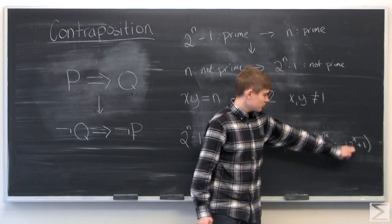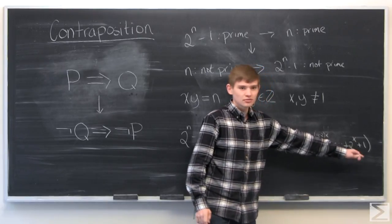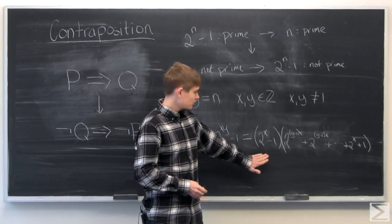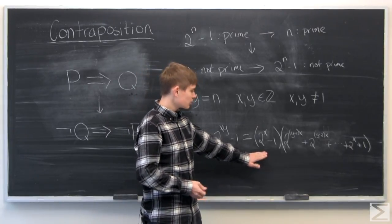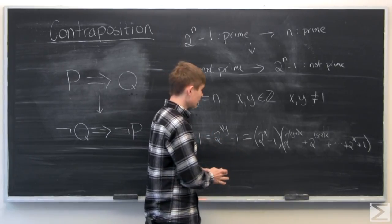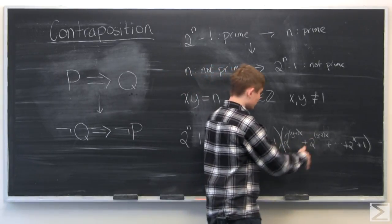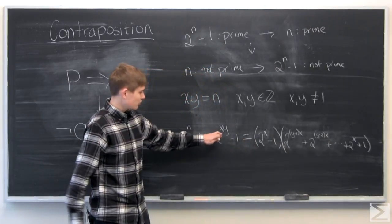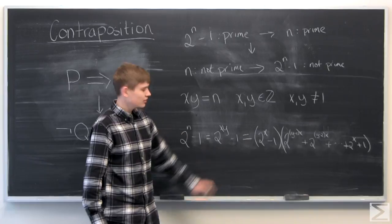And if this doesn't seem like it would work, if you start multiplying them out, which I encourage you to do, you should see that all of these middle terms will cancel and you'll be left with 2 to the power of x times y and then a negative 1 at the end.